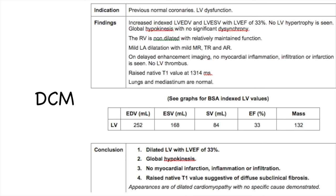This is our dilated cardiomyopathy template, demonstrated with a case of univentricular dilatation and LV ejection fraction of 33%. We include native T1 and ECV values when available, comment on atrial dimensions, and describe delayed enhancement appearances. In this patient we concluded: appearances are of dilated cardiomyopathy with no specific cause demonstrated — meaning no infarction and no infiltration could be clearly identified — so this is DCM with no apparent cause at this stage.